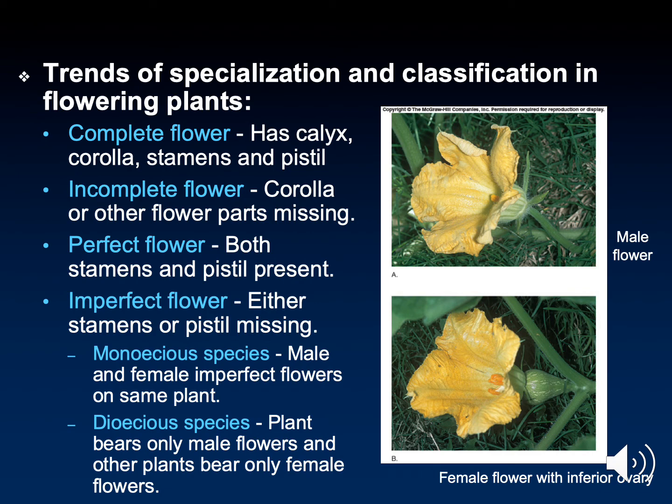In monoecious species, you have imperfect flowers, and the male and females are separate but occur on the same plant. In dioecious species, a plant will have only male flowers or only female flowers. An example of this are date palms — you have male date palms and female date palms. So in order to develop fruit, you want to plant both males and females in close proximity to each other.